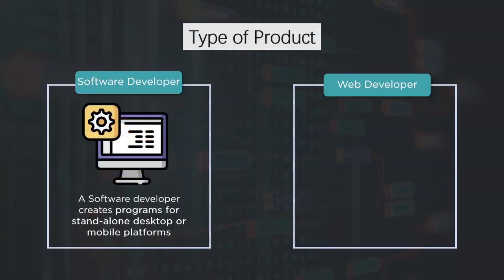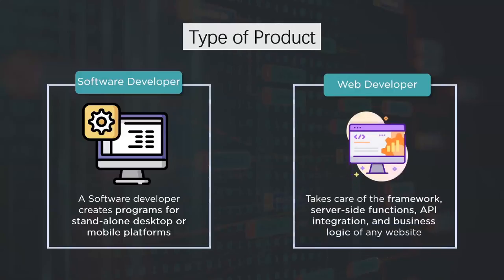Next is the type of product. A software developer creates programs for standalone desktop or mobile platforms. On the other hand, a web developer takes care of the web framework, server-side functions, API integration, and the business logic.